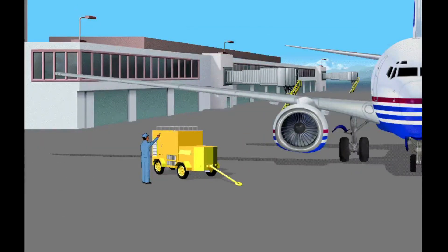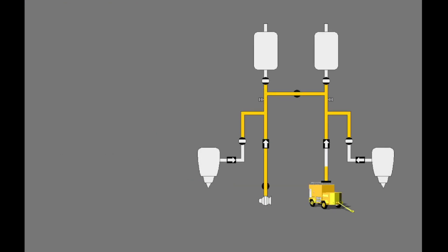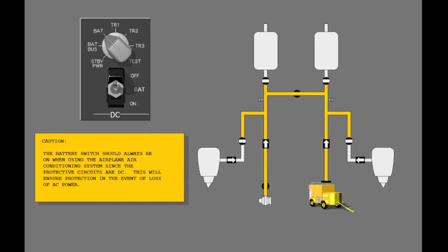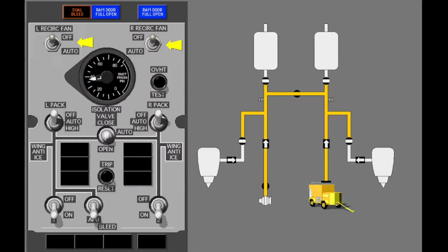While parked, you may use an external air cart to supply an alternate source of air. The external air cart connects to the right side of the airplane and the bleed air system. Before using the external air cart, make sure the battery switch is on. The battery powers the protective circuits of the bleed air system. With the temperature controls set as desired, select the recirculation fan to auto.